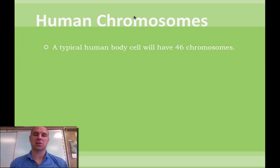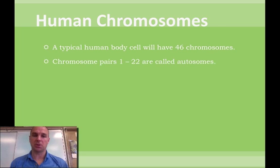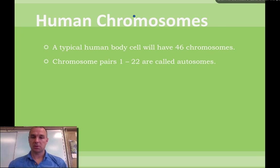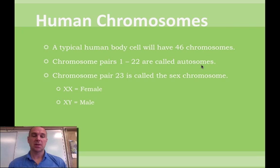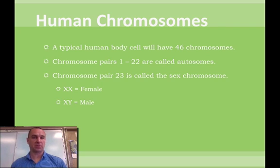When we look at human chromosomes — just a refresher — a typical human cell has 46 chromosomes. The first 22 pairs of chromosomes are called autosomes. Make sure you know that for the test. The 23rd pair is the sex chromosome. If you have XX, you're a female; XY, you're a male.